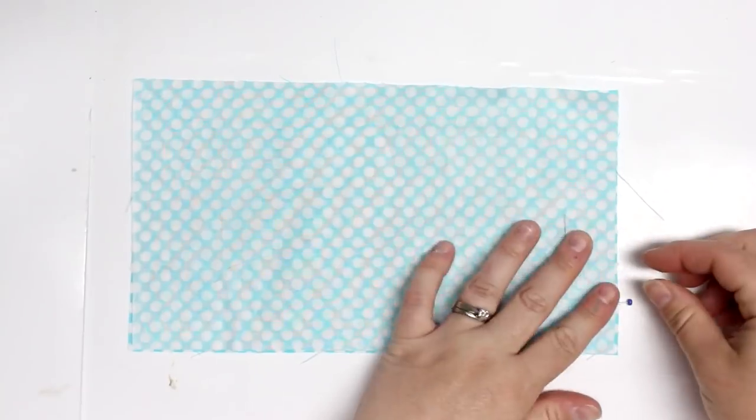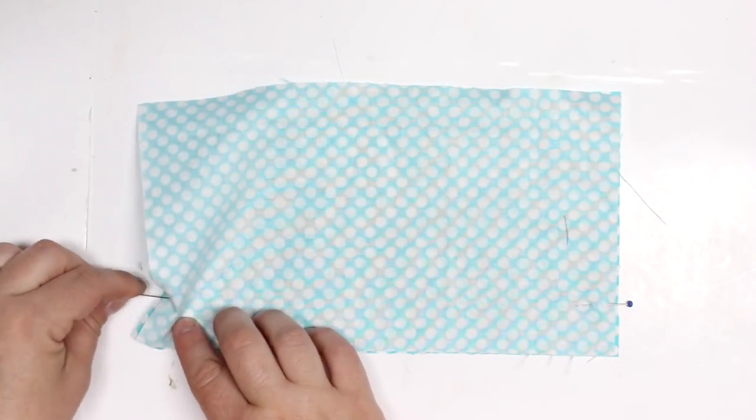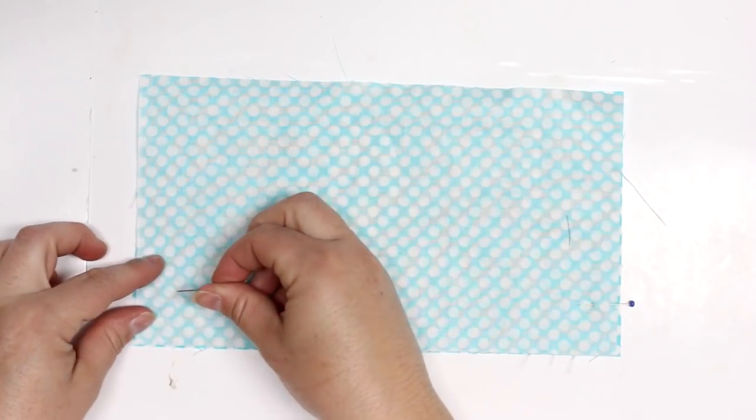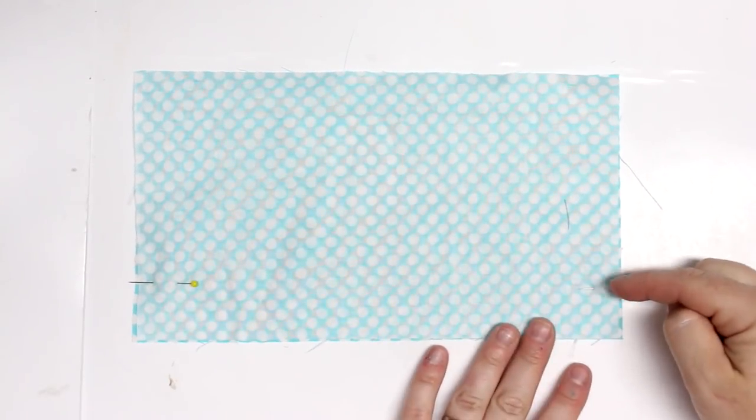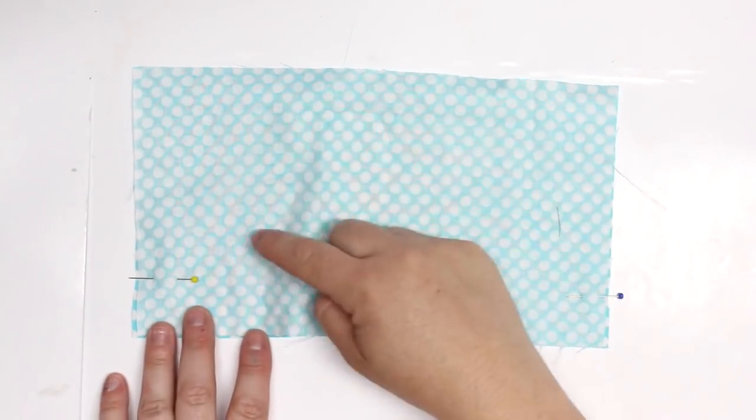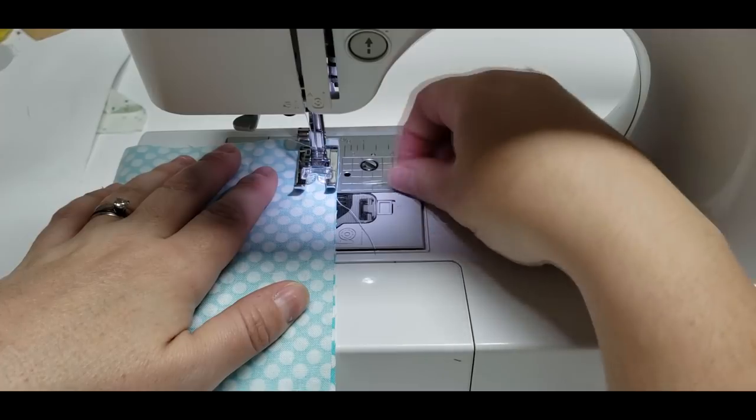The fabric that's in the middle - we'll take those two pieces and we will put those right sides together. I'm putting a pin one inch up from the bottom and we're not going to sew that portion, so we're just going to start sewing at the pin all the way down with a quarter of an inch seam allowance.